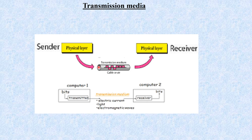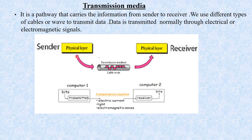Transmission media is a medium through which data moves from one network device to another network device. It is very essential for the communication system. It is a pathway that carries the information from sender or source to the receiver or destination. We use different types of cables or waves to transmit data. Data is transmitted through electrical or electromagnetic signals. An electric signal is in the form of electric current, and an electromagnetic signal is a series of electromagnetic energy pulses at various frequencies.